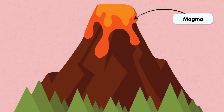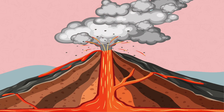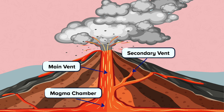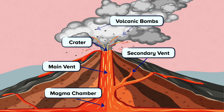Volcanoes are formed when magma comes to the Earth's surface. Once it is outside the volcano it is called lava. The magma chamber is underground and this is where the magma is stored. The main vent is the main channel that the magma goes through to reach the surface. The secondary vent is a smaller vent that magma may also escape from. The crater is the space at the top of the volcano that magma erupts from. Volcanic bombs are molten rocks that are thrown out of a volcano during an eruption.